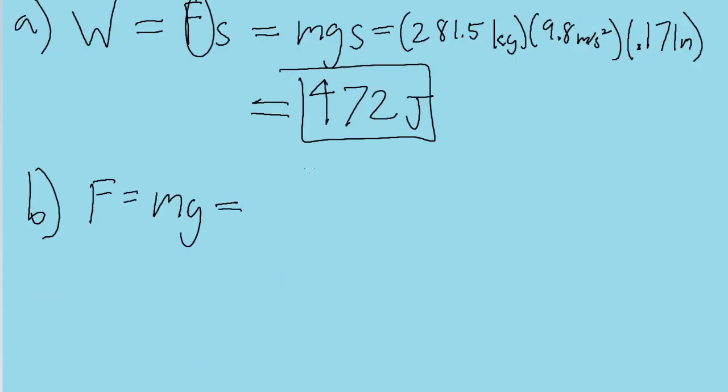So we're just going to multiply the mass of the object, which is given in the problem as 281.5 kilograms, and multiply that by the gravitational acceleration g, 9.8 meters per second squared. And if we put that into a calculator,